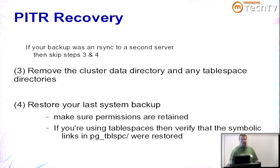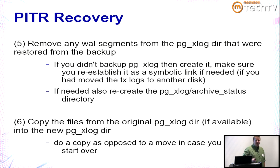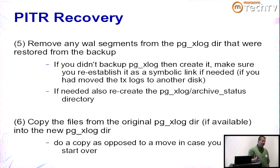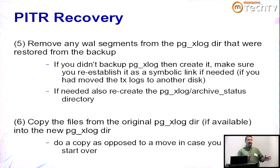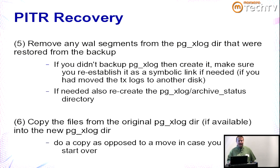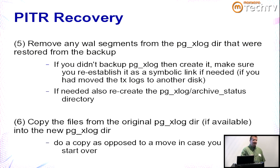Next, in the restored data directory, go into the pg_xlog directory and remove everything except the pg_xlog directory itself and the pg_xlog/archive_status subdirectory. The reason is that the base backup's pg_xlog reflects the state at backup time — leaving those unarchived transactions would confuse the recovery. Then, if you saved your original pg_xlog directory, copy it into the new pg_xlog directory. This is what allows you to recover any transactions that were committed but not yet archived.